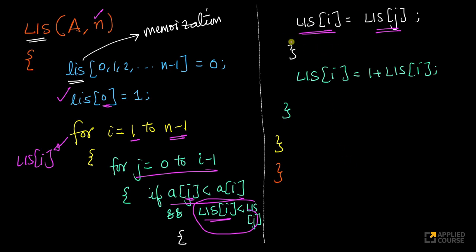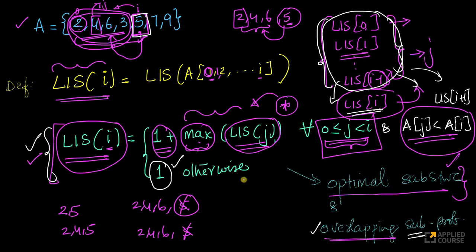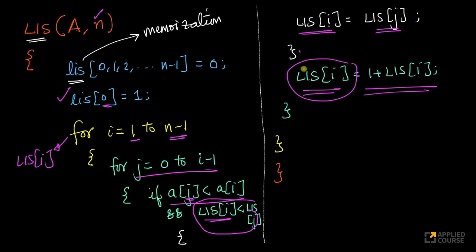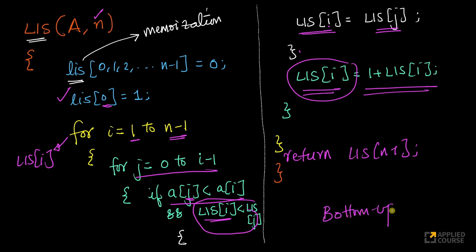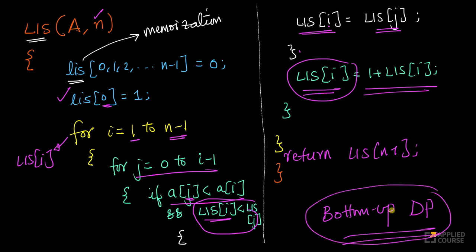So LIS(i) = 1 + LIS(j), taking the maximum over all valid j's where a[j] < a[i]. This whole mathematical expression is translated into a nested for loop. The green inner for loop ends, the yellow outer for loop ends, and the function simply returns LIS(n-1). This is bottom-up DP — not using recursion, using an iterative solution to avoid stack space overhead.